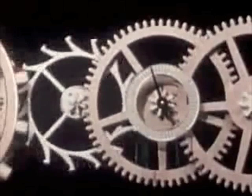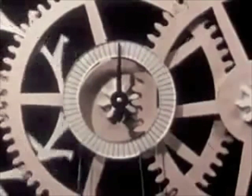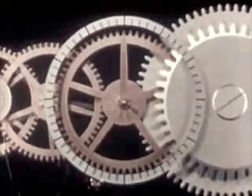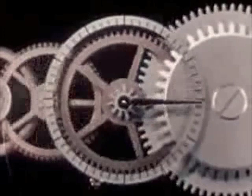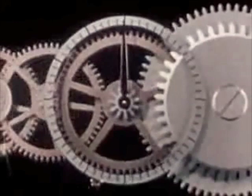To count the minutes, we can attach a dial and fasten a pointer to this gear wheel, which is just the right size so that it turns one complete revolution while the second hand makes 60 revolutions. And to count the hours we can have another pointer geared just so to move one complete revolution every 12 hours.